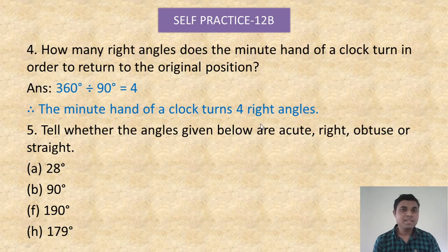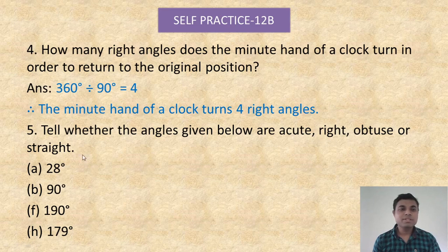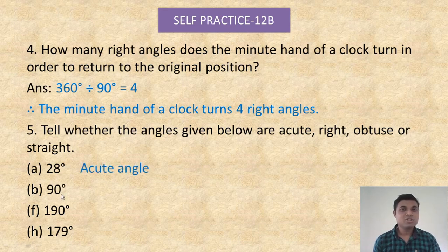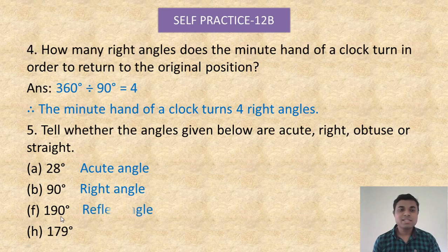Question number five: tell whether the angles given below are acute, right, obtuse, or straight. I hope you have learned what each type means. (a) 28 degrees — that is less than 90 degrees, so it is an acute angle. (b) 90 degrees — so it is a right angle. (c) 190 degrees — this is more than 180 degrees but less than 360, so it is a reflex angle.